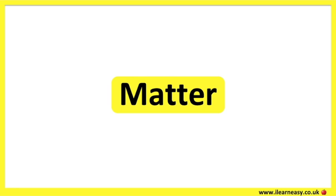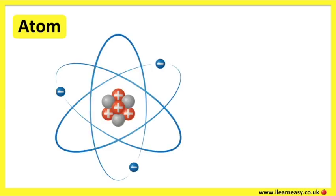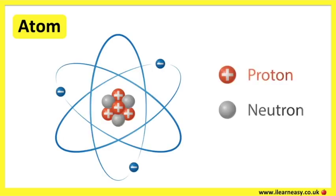Matter is made up of atoms. An atom consists of protons, neutrons, and electrons. Protons are positive. Neutrons are neutral. Electrons are negative.